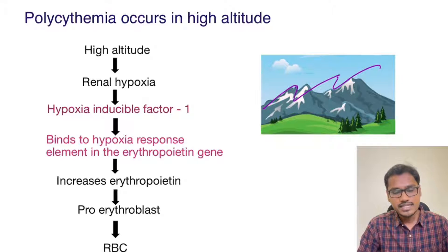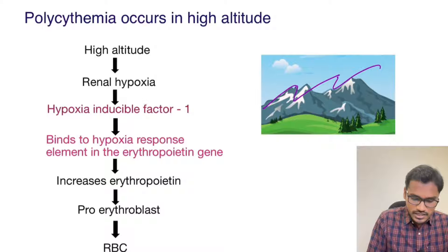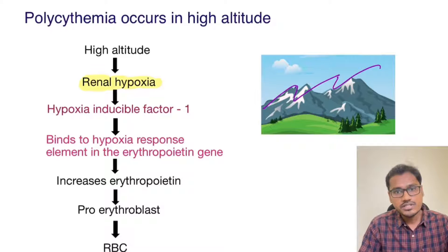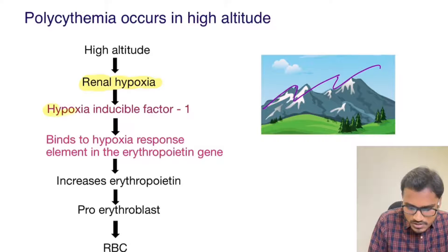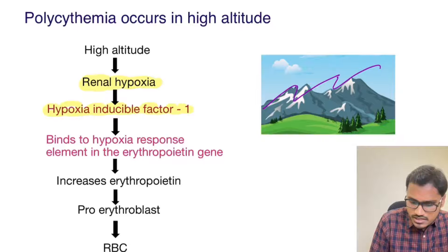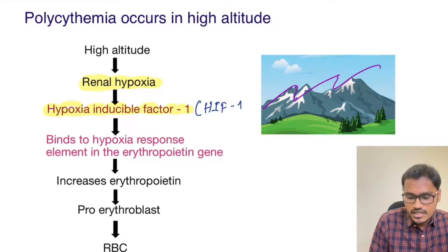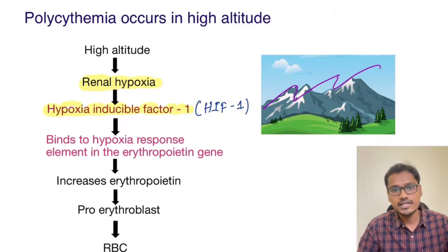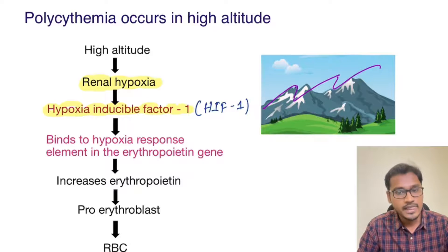This hypoxia will be especially sensed in the renal system, producing renal hypoxia. This renal hypoxia in turn will produce a substance that is the most important factor for polycythemia — that is Hypoxia Inducible Factor 1, called HIF-1.